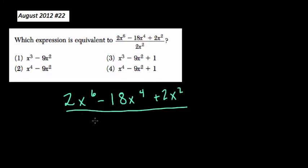So here we want to know which expression is equivalent to the expression 2x to the sixth minus 18x to the fourth plus 2x squared all over 2x squared.